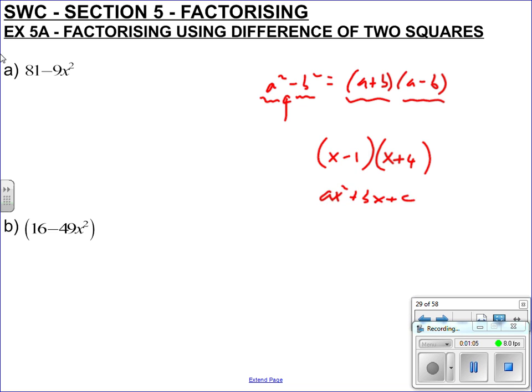But it's only in the case when you've got a difference of two squares that you get a two-term object coming out of a two bracket multiplication.